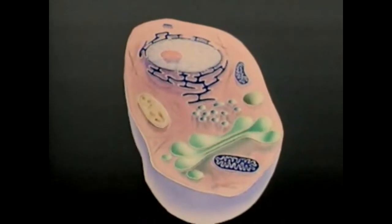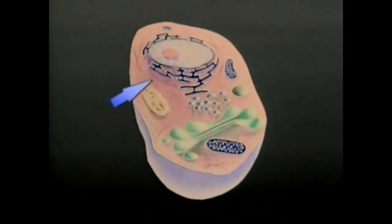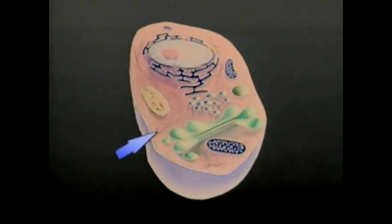Within the cell but exterior to the nucleus is the cytoplasm. This jelly-like substance provides a viscous environment for all of the intracellular components.